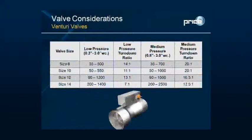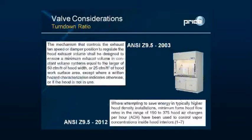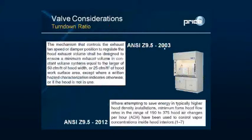To illustrate the importance of turndown, consider a code change that significantly affects fume hood exhaust. Comparing ANSI Z9.5 2003 to ANSI Z9.5 2012, the 2003 version required 50 CFM per foot of hood width, or 25 CFM per square foot of hood work surface area, as the minimum exhaust rate. The 2012 version instead references hood air changes, noting that 150 to 375 hood air changes per hour has been used successfully to control concentrations and maintain containment.